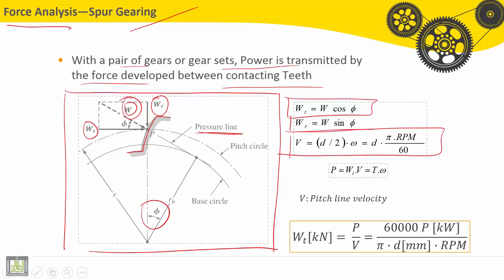The velocity V is equal to the radius, or the half of diameter, multiplied by the angular velocity. So it is equal to d pi into rpm divided by 60.